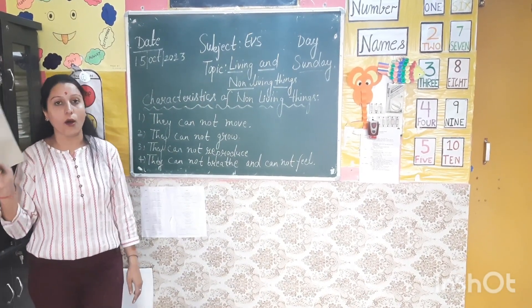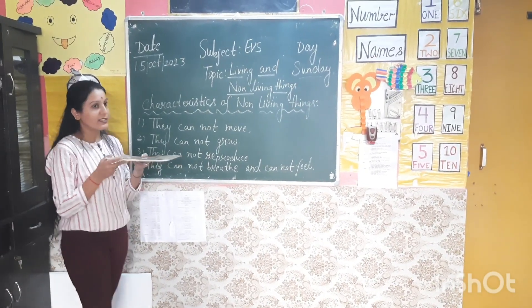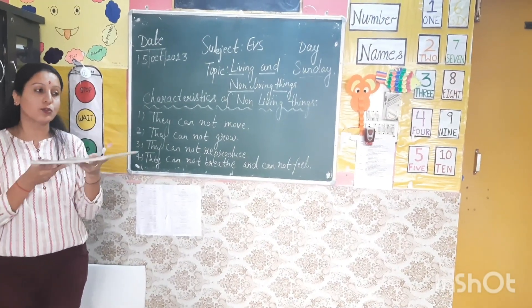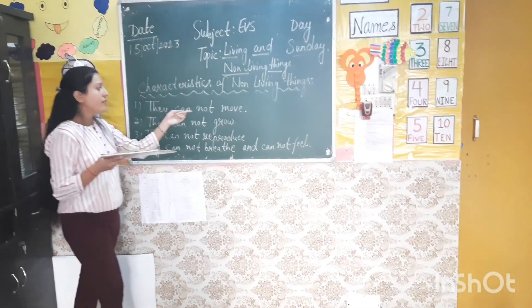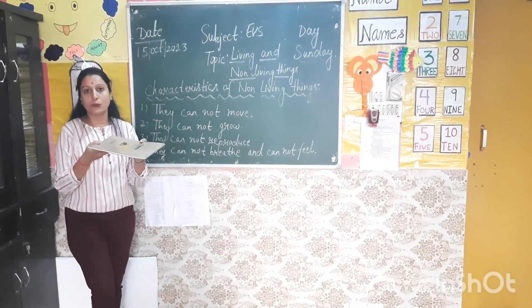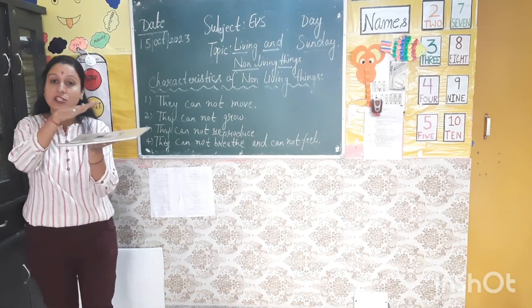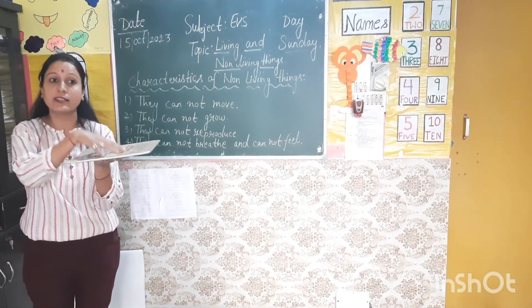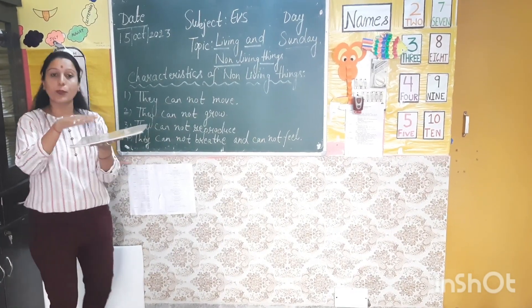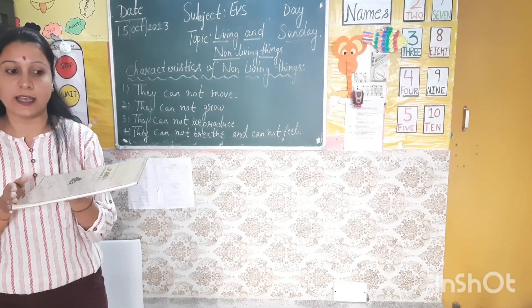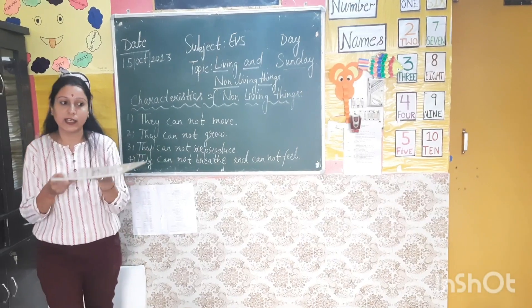A book is an example of non-living things. They cannot move — if you place a book somewhere it will not move on its own. They cannot grow — the book I have kept in my hand is still the same size, it is not going to grow.